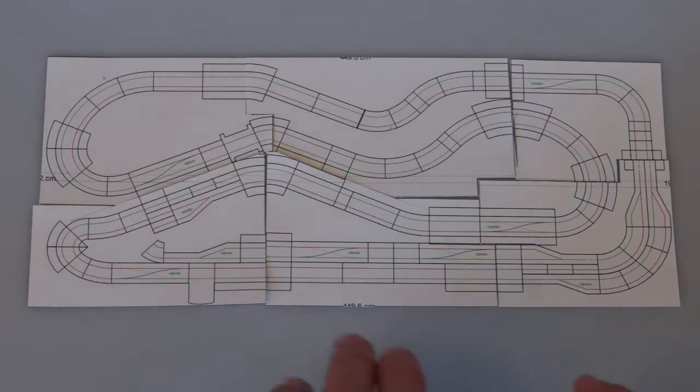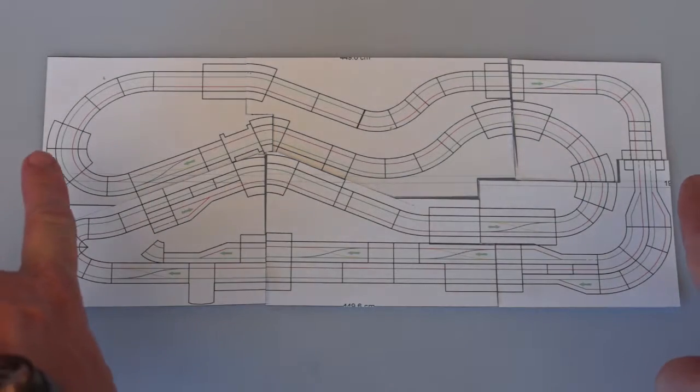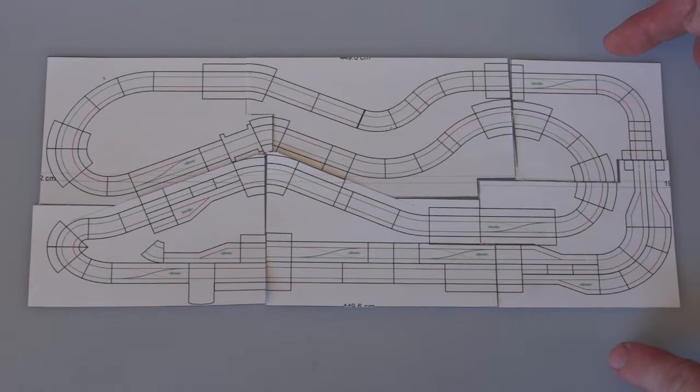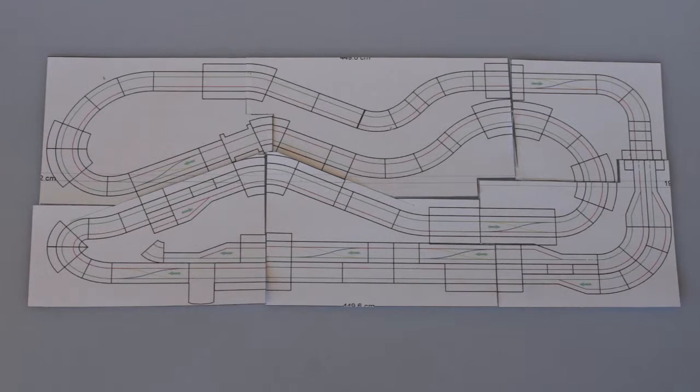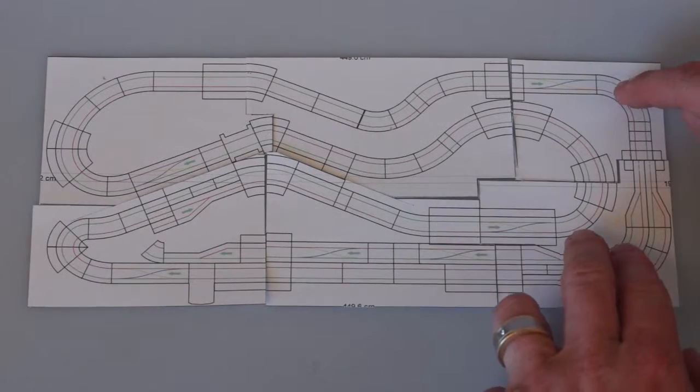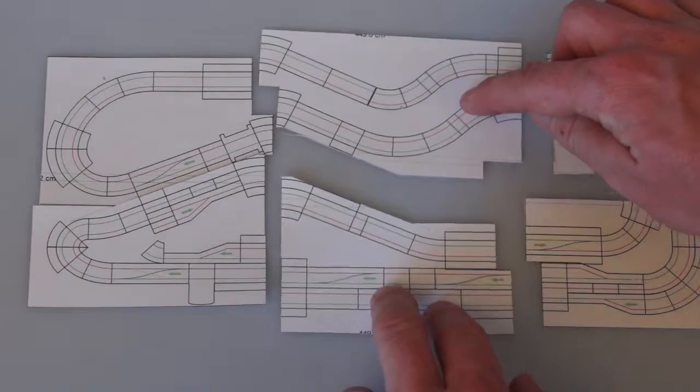The actual table the track will be built on is four and a half meters by about two meters. So it's a pretty big table, a big table that's hard to store. So the plan is we're building it in six sections.